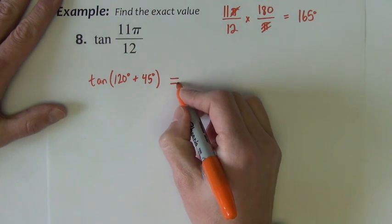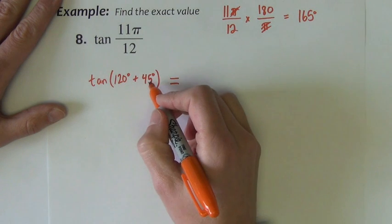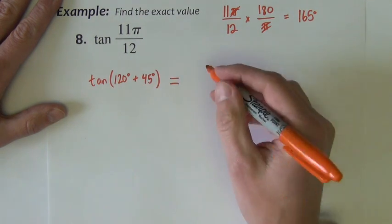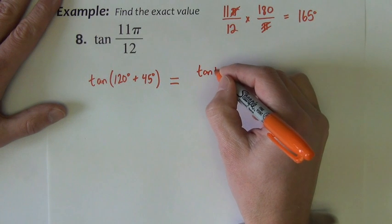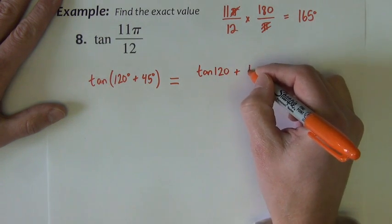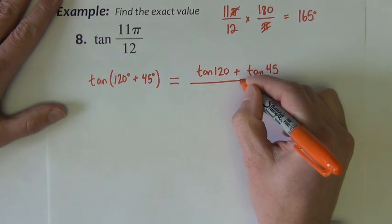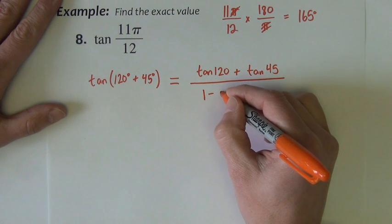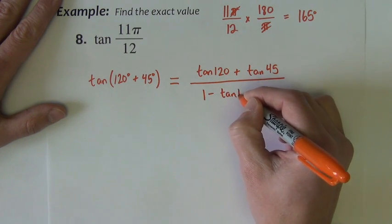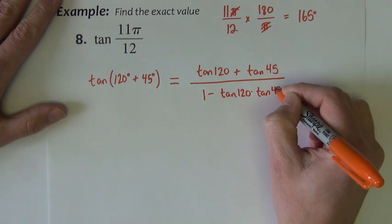So expanding this, this time you're going to use the tangent formula. Where the 120 is the u, the 45 is the v. That formula says we want tangent of 120 plus tangent of 45 divided by 1 minus tangent 120 times tangent 45.